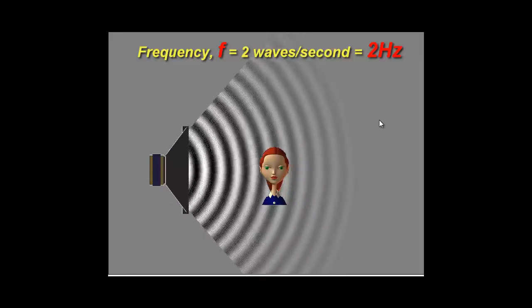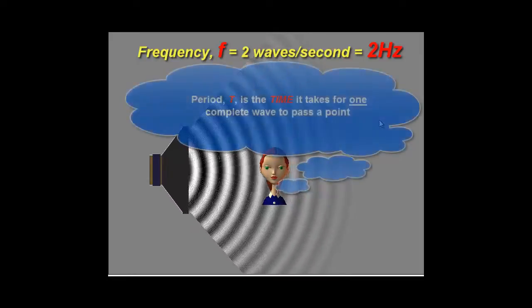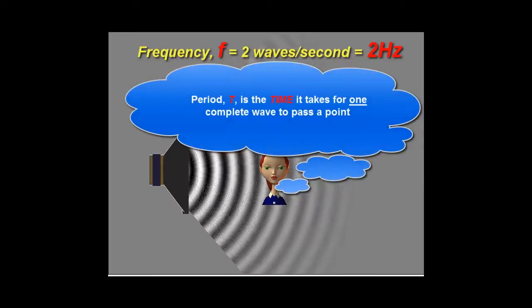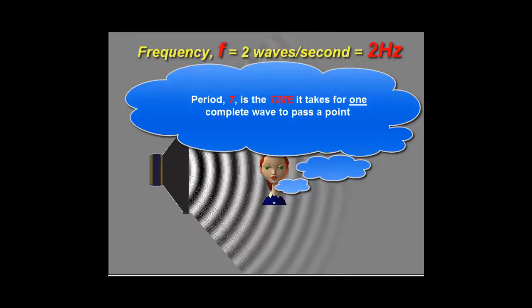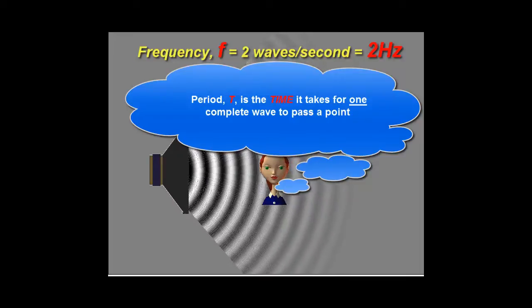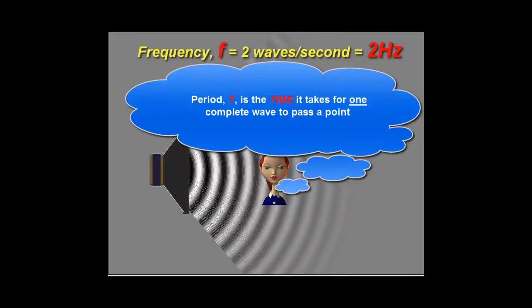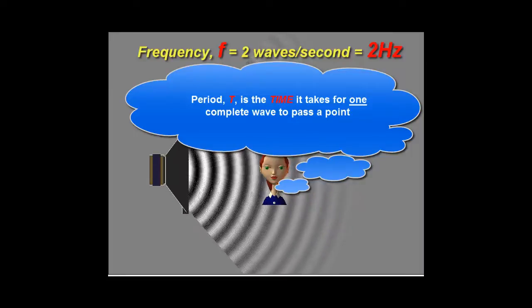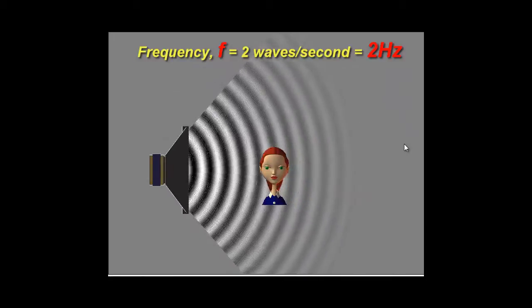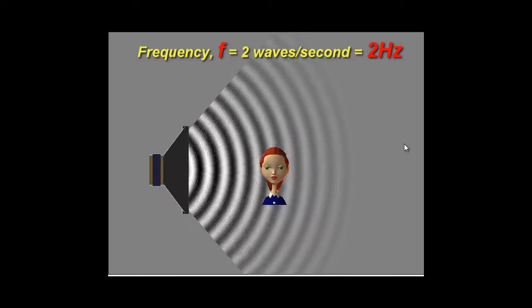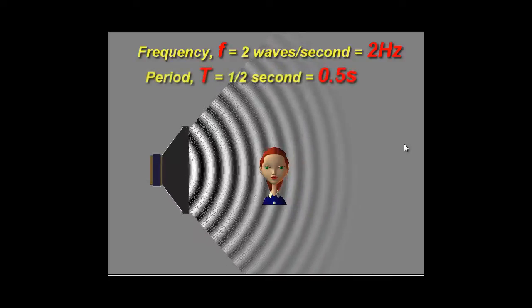Now if I asked you what is the period of the wave, the definition of the period of the wave is how long it takes for one wave to be generated. If it's making two waves per second, notice the per second means frequency, so two Hertz, then it takes one half of a second to create one wave.